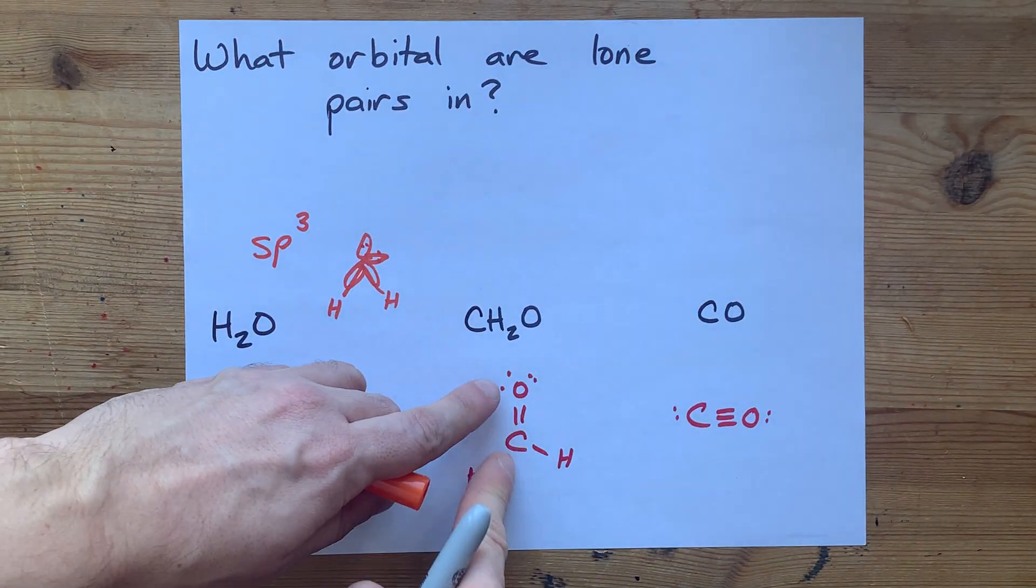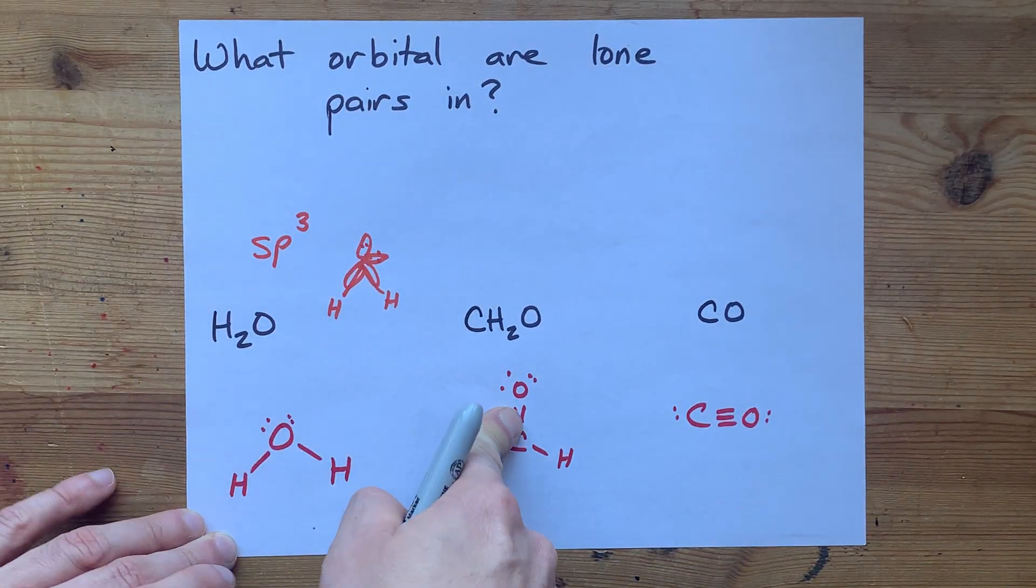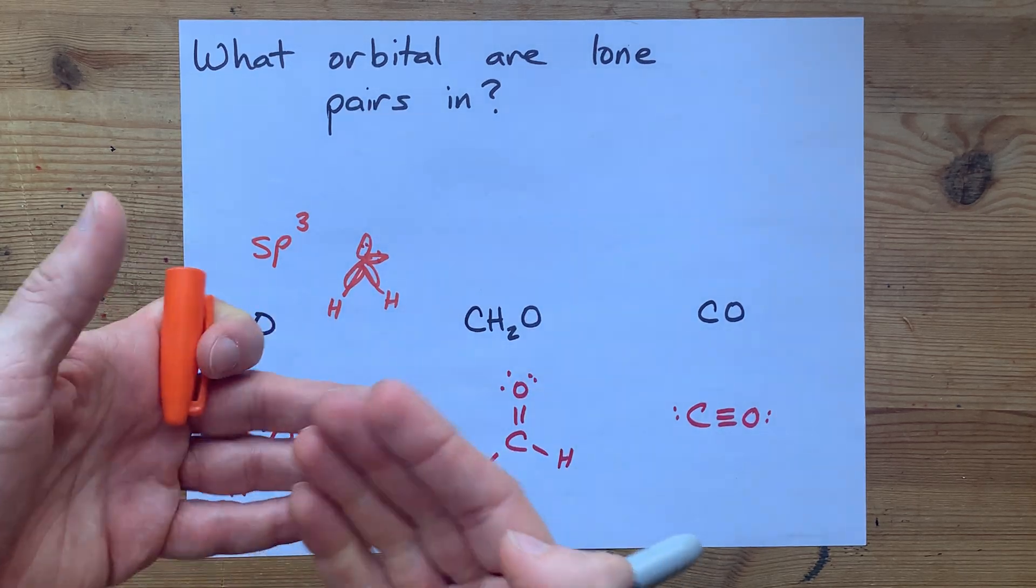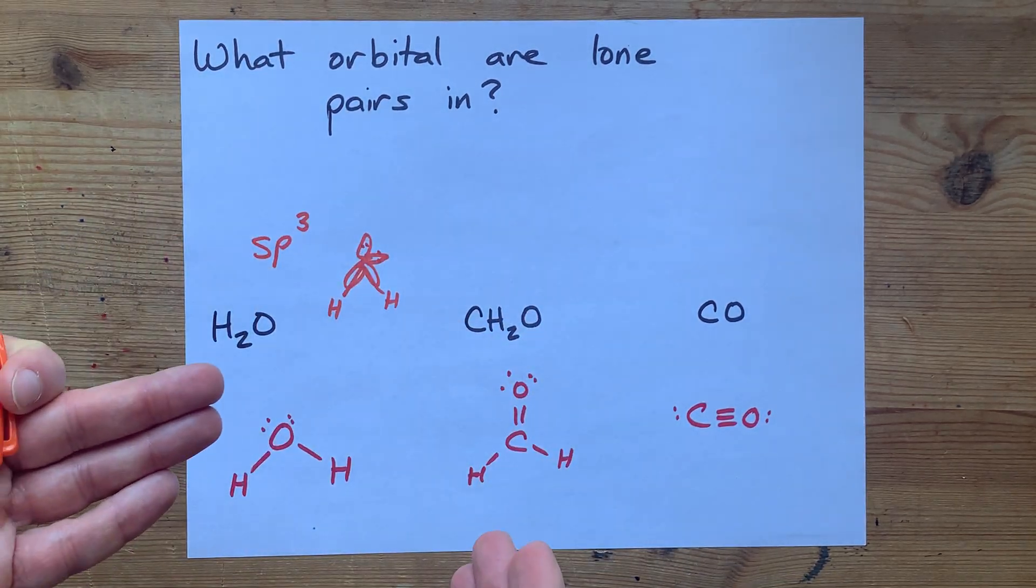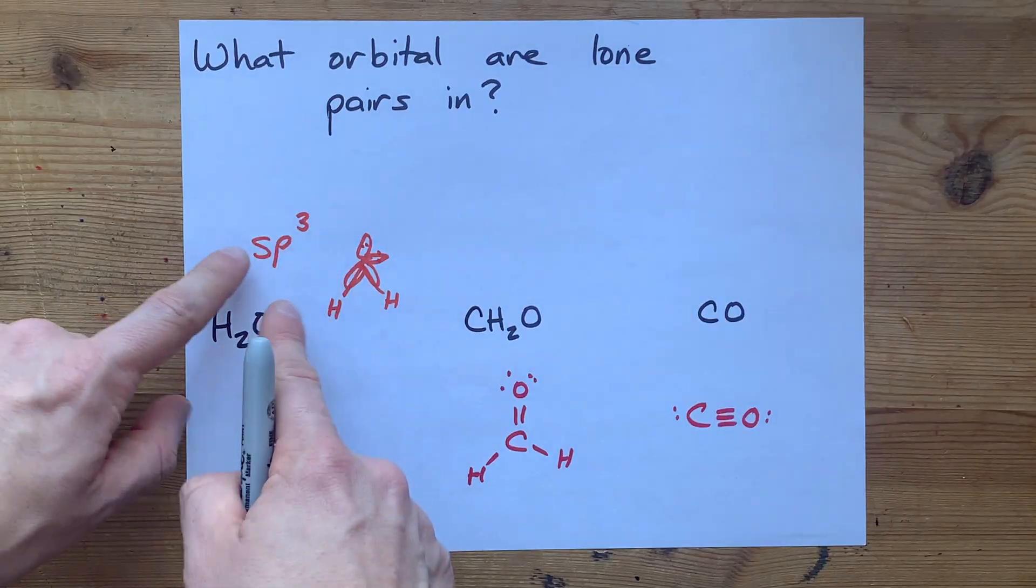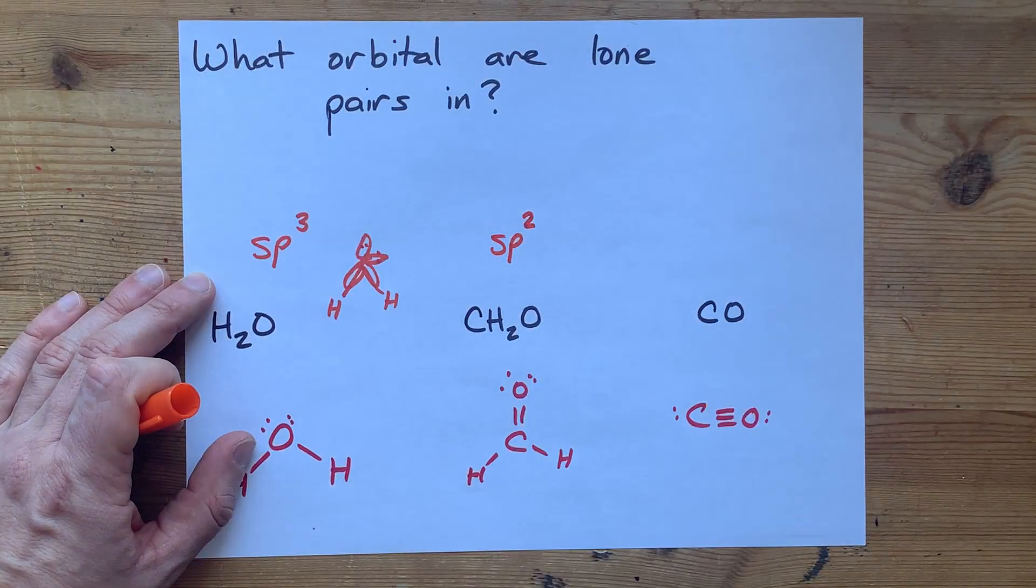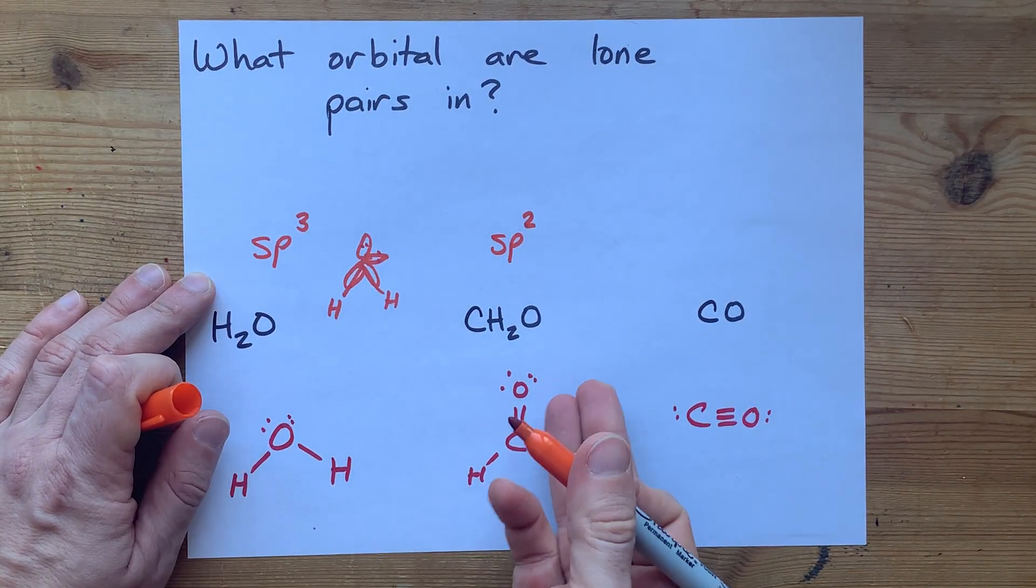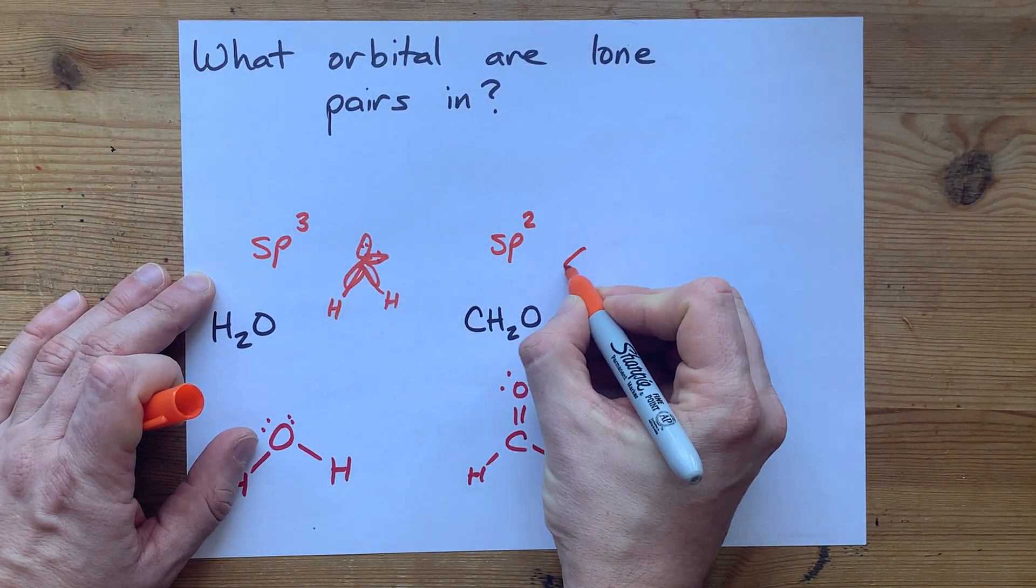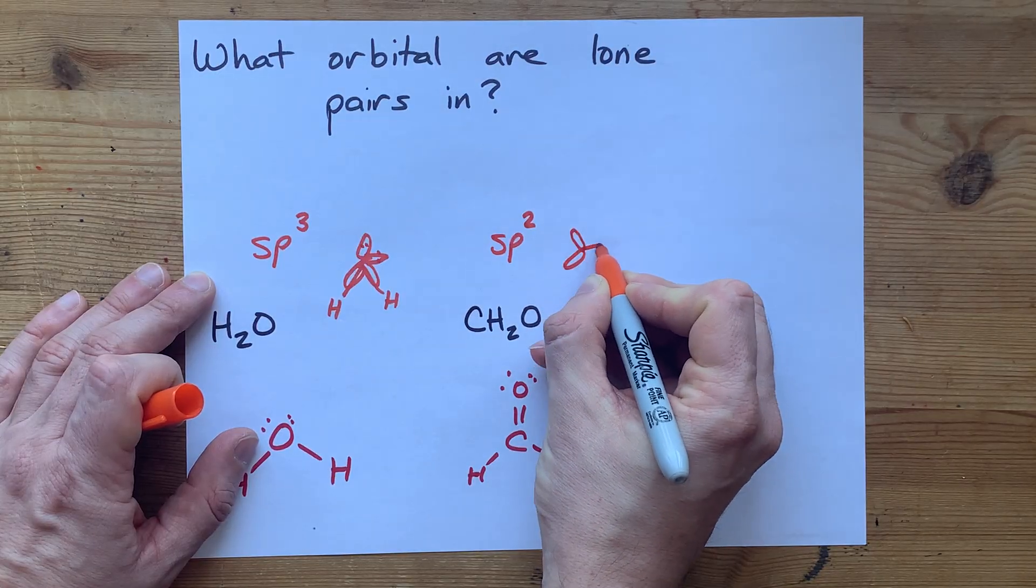you have a sigma bond and two lone pairs, and a pi bond. The pi bond needs an unhybridized orbital, so you can't hybridize together all three of the p's. Instead, you need sp2 hybridization. That's trigonal planar.